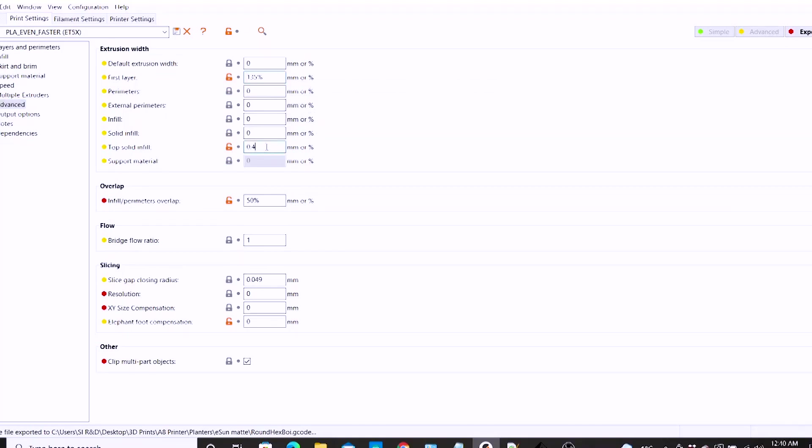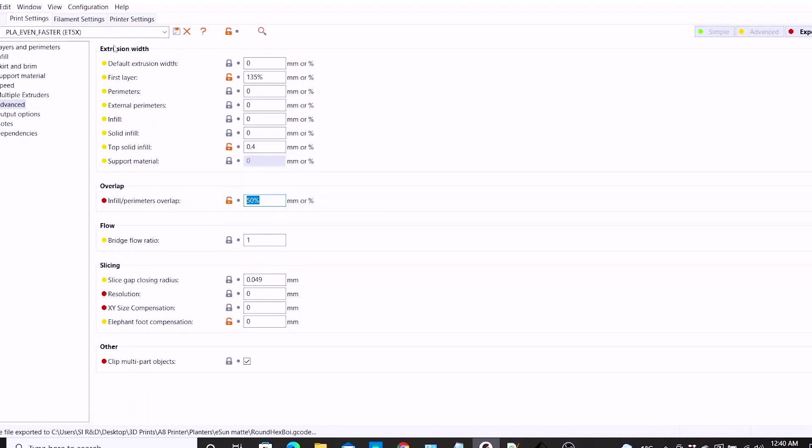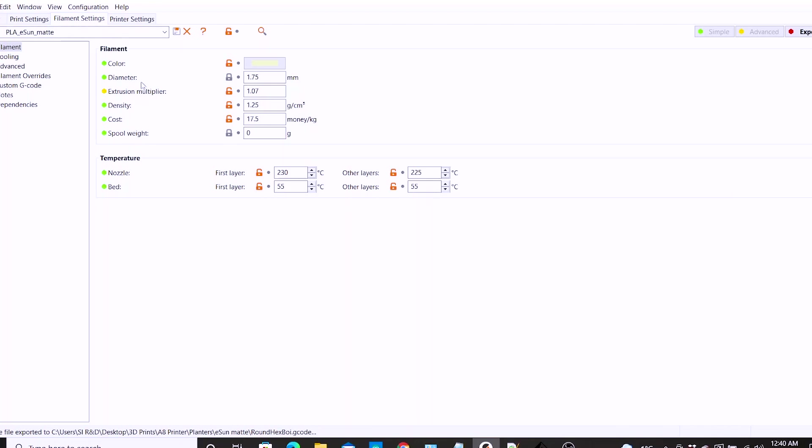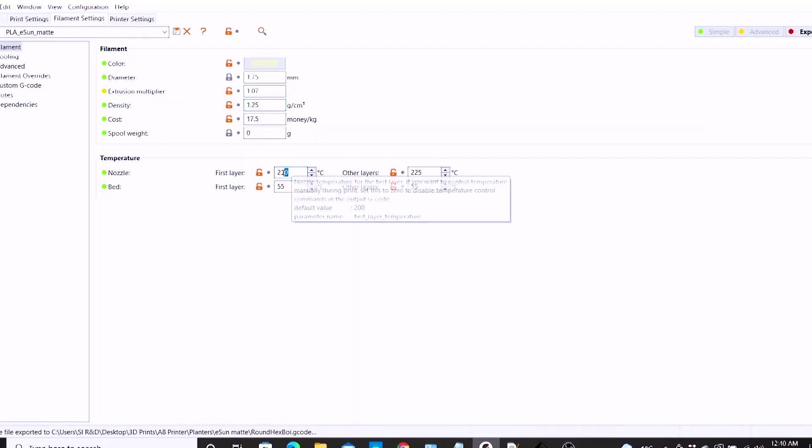In terms of extrusion width, first layer was 135% and the top solid infill was pretty much just the nozzle diameter of 0.4 millimeters. I did bump up the infill and perimeter overlap, and this was one of the settings I also had to adjust to account for some of that under-extrusion I was seeing between the infill and the perimeters. Extrusion multiplier I increased 7% to account for the smaller diameter filament.